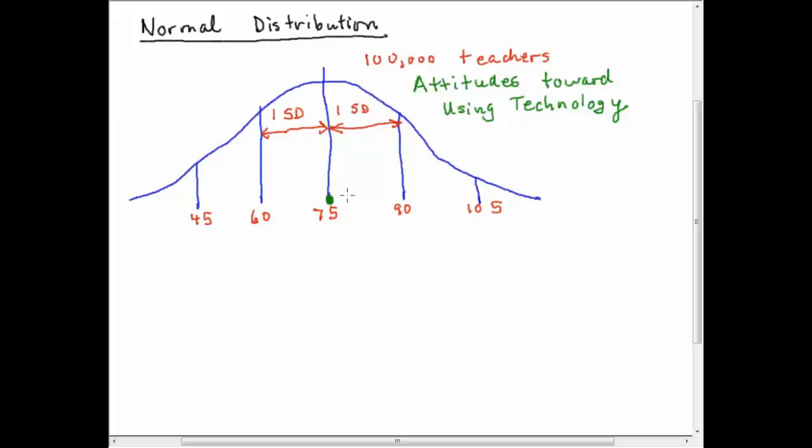Let's just pretend that's the case and we can see that there's a standard deviation here and it's 75 minus 60 which is 15. So this is our normal distribution with a lot of teachers.